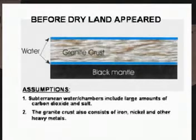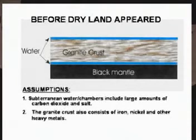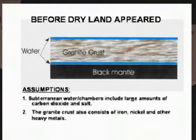Subterranean water chambers included large amounts of carbon dioxide. Walt only has one major assumption of his theory that explains over 20 different things on the earth today — that there was water under the crust of the earth at one time, all interconnected in chambers. That's what the Bible says. His second assumption, a sub-assumption, is that there were large amounts of carbon dioxide and salt, and the granite also contained iron, nickel, and other heavy metals.